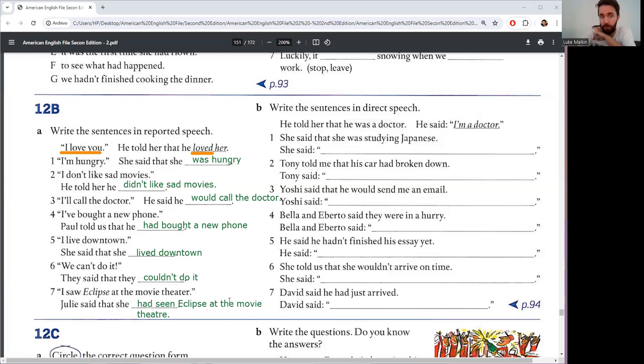Part B, we write the sentences in direct speech. Okay, so now the reverse. Example: he told her that he was a doctor. The actual words he said: I'm a doctor. And now the report was past, so the actual words are present. Was, am. Pause and complete seven questions.